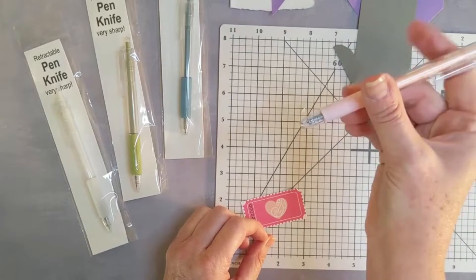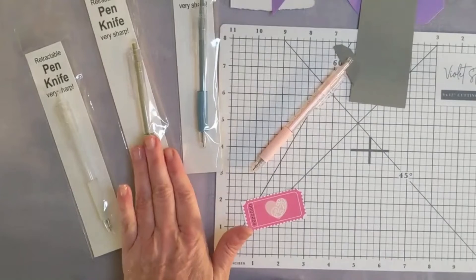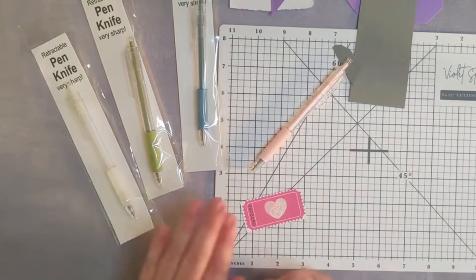So that is our retractable pen knife. We've got it in a couple of different colors. We've got pink, we've got a blue, we have a sagey green and white kind of clear, white or clear color.